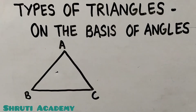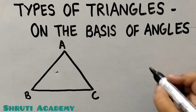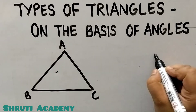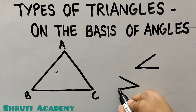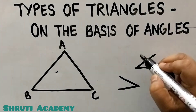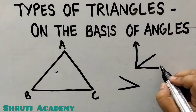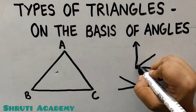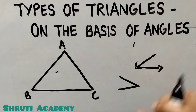Now I have a triangle drawn — A, B, and C. If I look at these angles, they appear to be acute angles because they are less than 90 degrees.